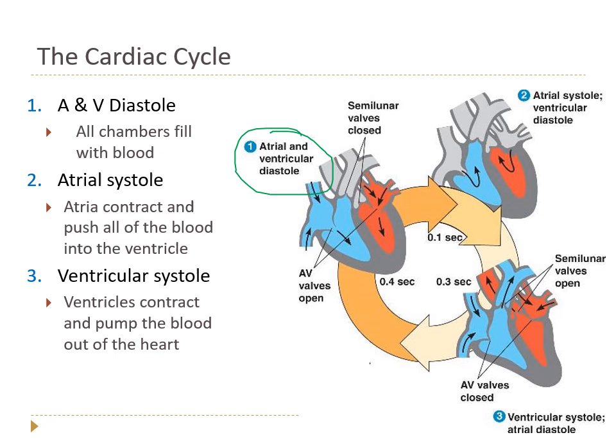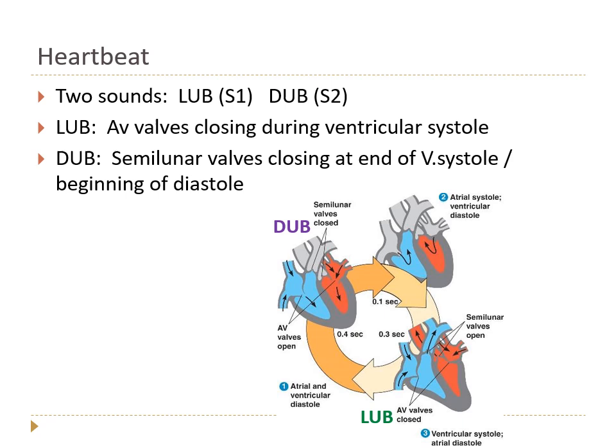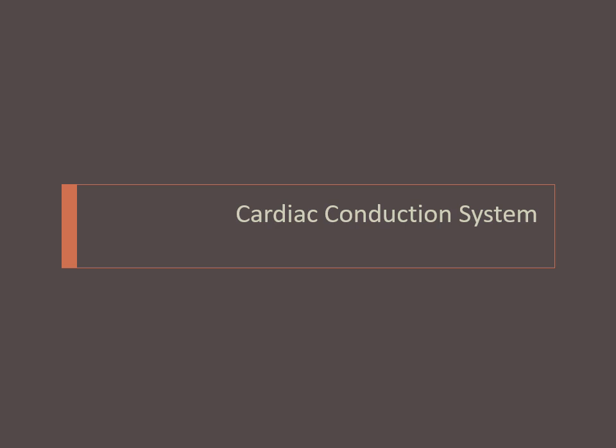We talked about the cardiac cycle. At first, both the atria and the ventricles are relaxed, in diastole, and we have passive filling of the heart with blood. Then the atria contract and push all of the blood into the ventricles. Then the ventricles contract, which closes the AV valves, and blood moves out through the pulmonary artery and the aorta. Then we return to diastole and the semilunar valves close to prevent backflow. It's the closing of those valves that cause the two heart sounds — lub is the closing of the AV valves during ventricular systole, and dub is when the semilunar valves slam shut at the end of ventricular systole.